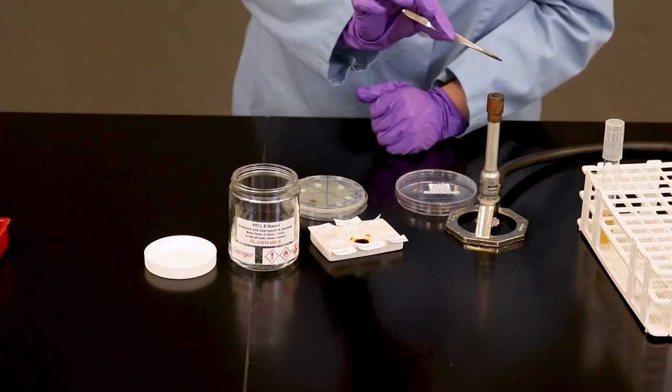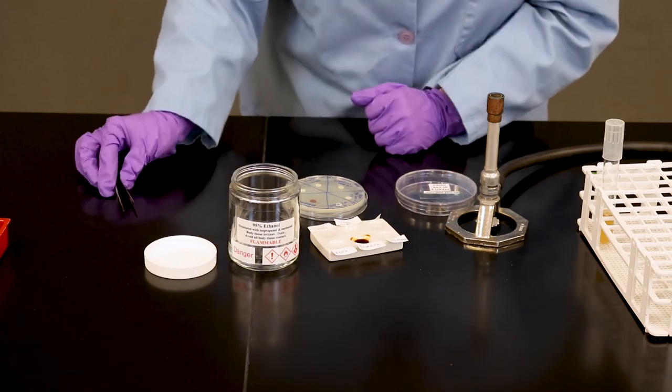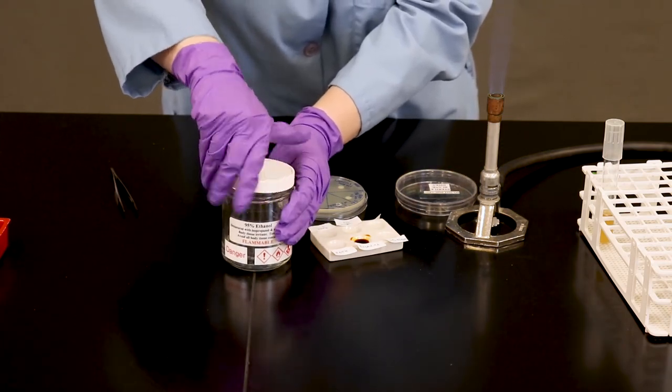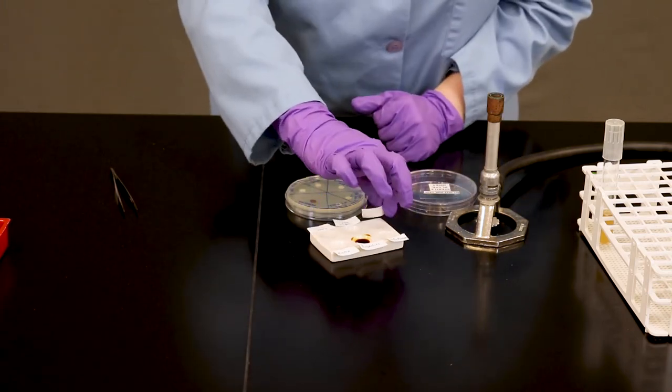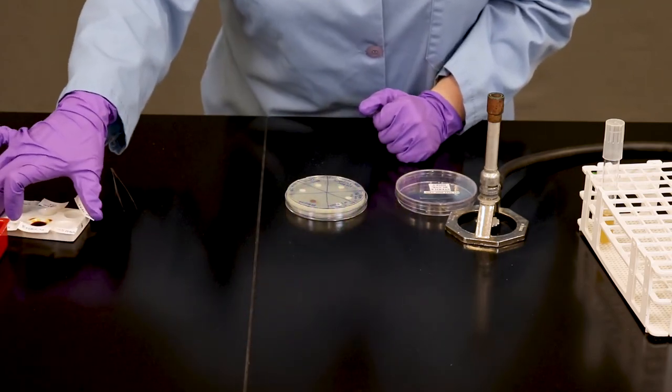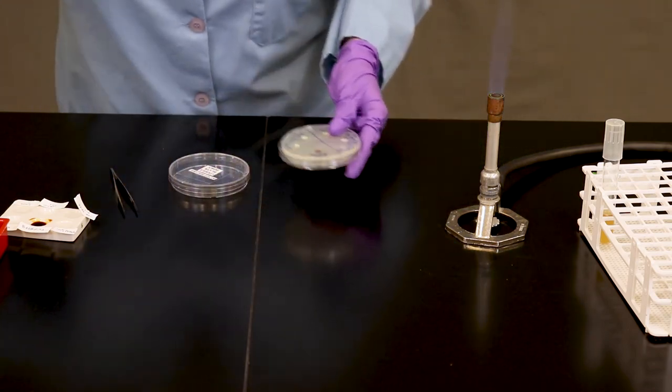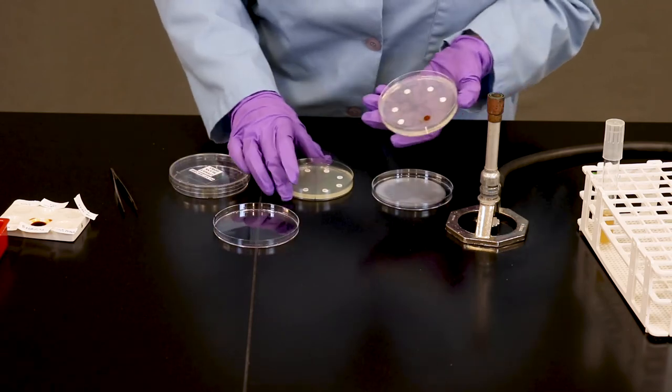Be sure to flame one last time before putting your forceps away. Cover your alcohol, get it out of the way from the Bunsen burner. You'll see a disposal area to replace all of your disinfectants. This is essentially what your final steps when you're done should look like.